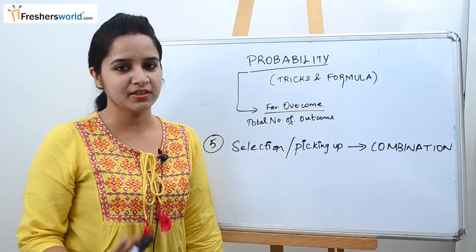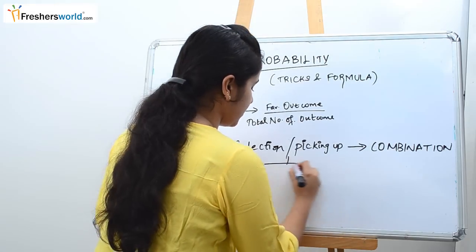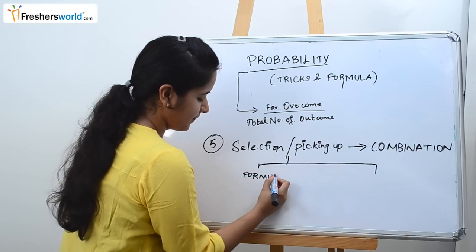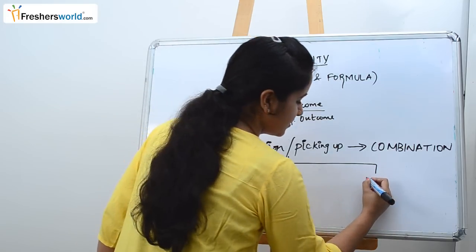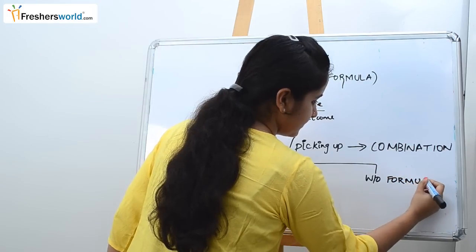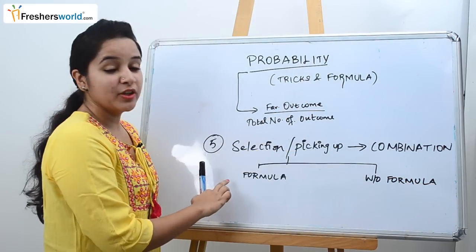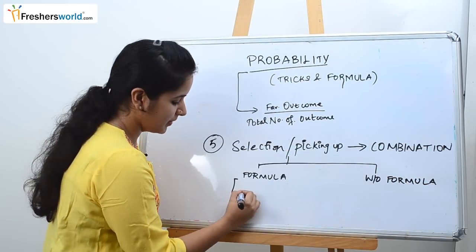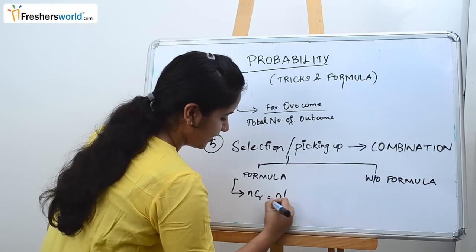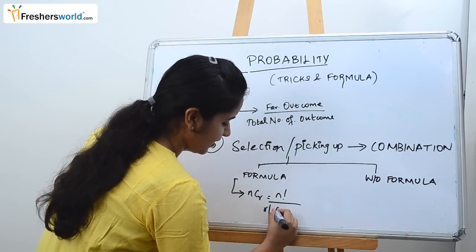So there are two ways of solving this combination. One is using the formula that we generally know and here comes without formula.